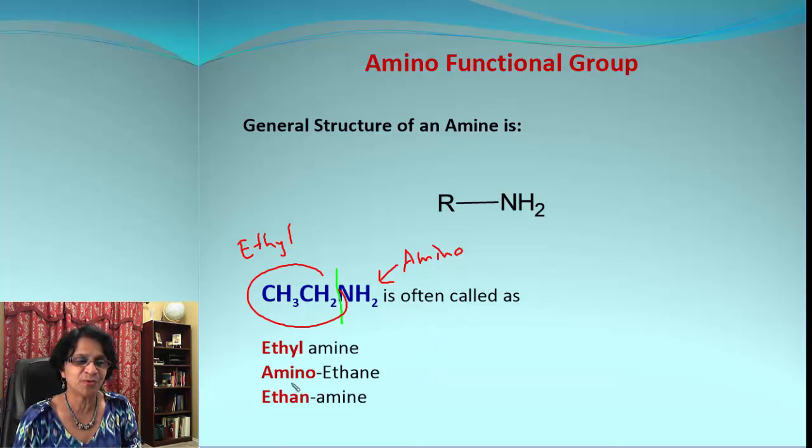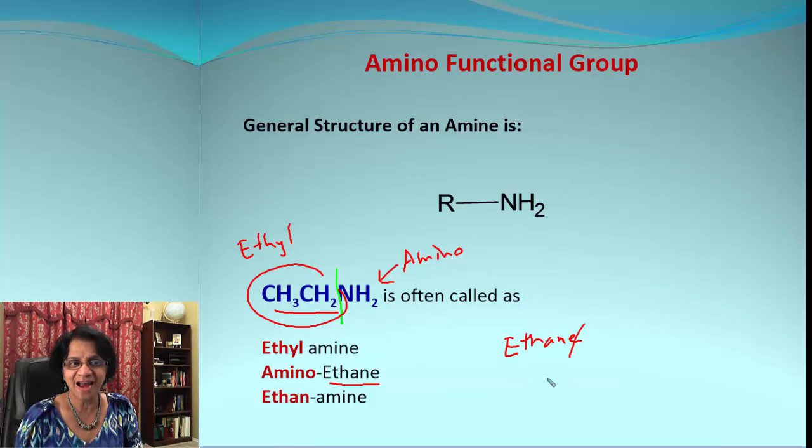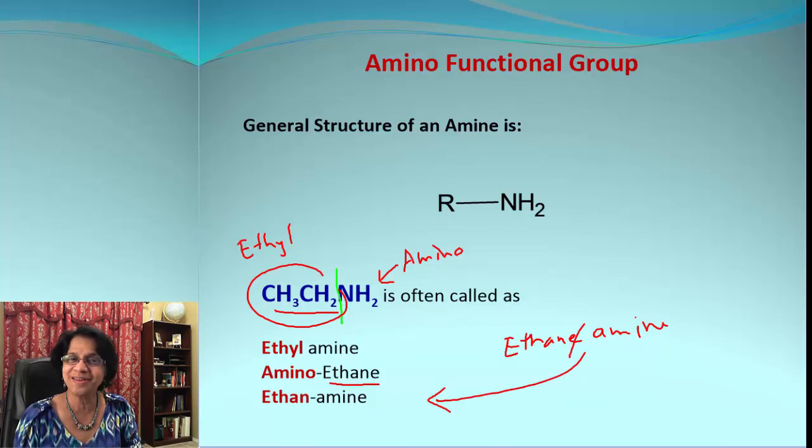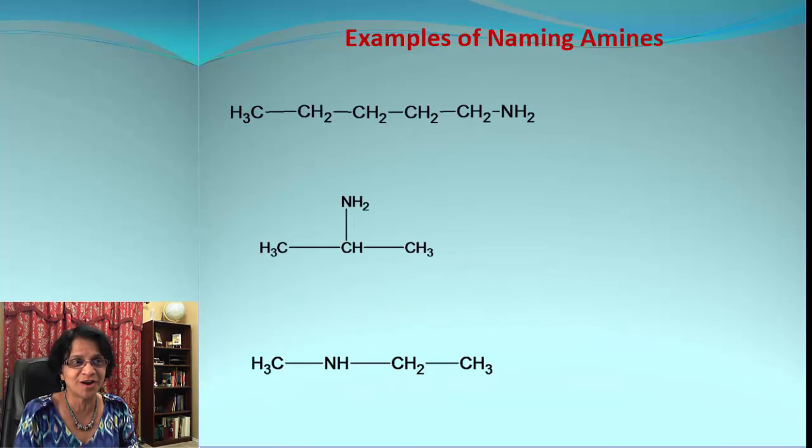The second method is we put amino prefix before the alkane and it's a two-carbon chain so you just put ethane there. And the third method is we take the parent chain, two carbon atoms so it is ethane, remove that E and then you're going to add amine to that. So that's what we got: ethanamine. Are you guys ready now to work on some examples? Let's get started.